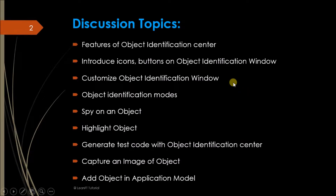So in this video, what topics are we going to discuss? Let's see one by one: features of object identification center, then introduction of the object identification icon and associated buttons on the object identification window, how to customize the object identification window, how many modes we have with the object identification center, how we can spy on the object, how we can highlight a particular object, how we can generate the code, capture an image of an object, and add an object in the application model.